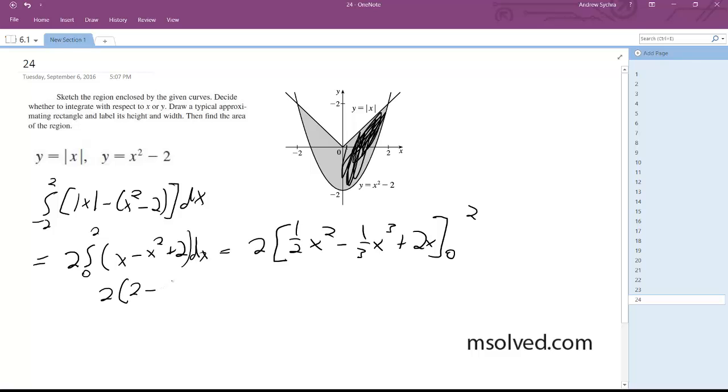And we ultimately get 2 times 2 minus 8 over 3 plus 4, which simplifies down to 20 over 3. And that's it. Thank you.